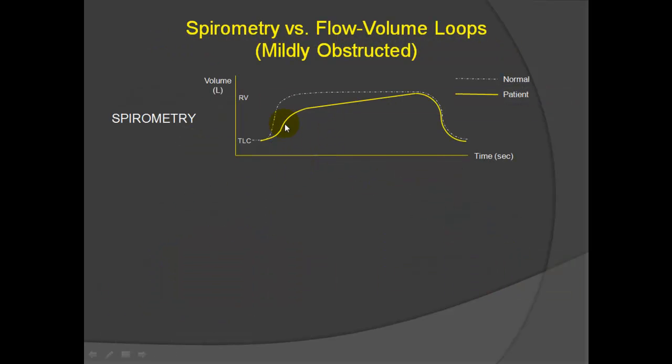Here are some abnormal studies. In this study, we have volume on the y-axis and time on the x-axis, and the normal graph is documented in white. We've already shown you that. But in this patient, although they eventually get out the correct amount of vital capacity, it's right at normal right over here, it didn't flow out as well.